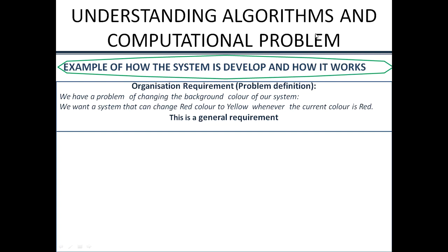In the previous session, we looked at the organizational statement. They came up with a general statement: they have a problem of changing the background color of their system. They want a system that can change the red color to yellow whenever the current line color is red. So the organization knows exactly what they want and why they want it — perhaps they need this as a traffic light system to sell and make money. The problem is that they cannot change the background color of their system.